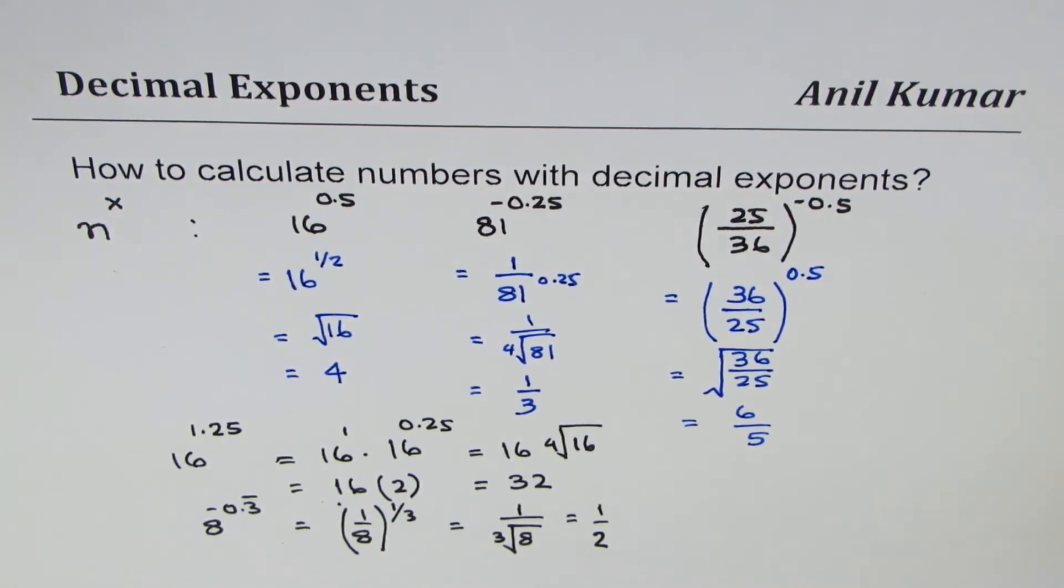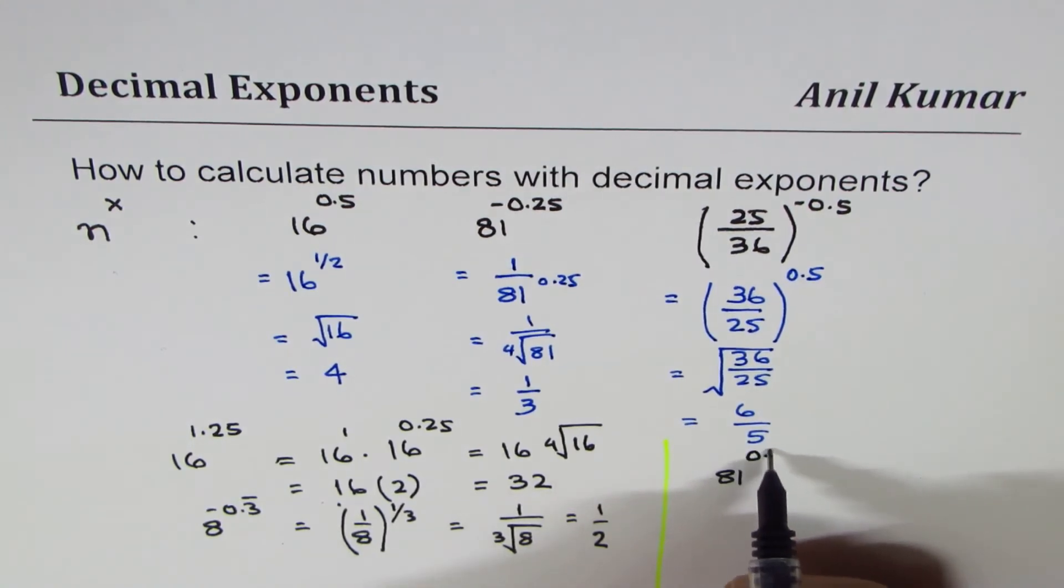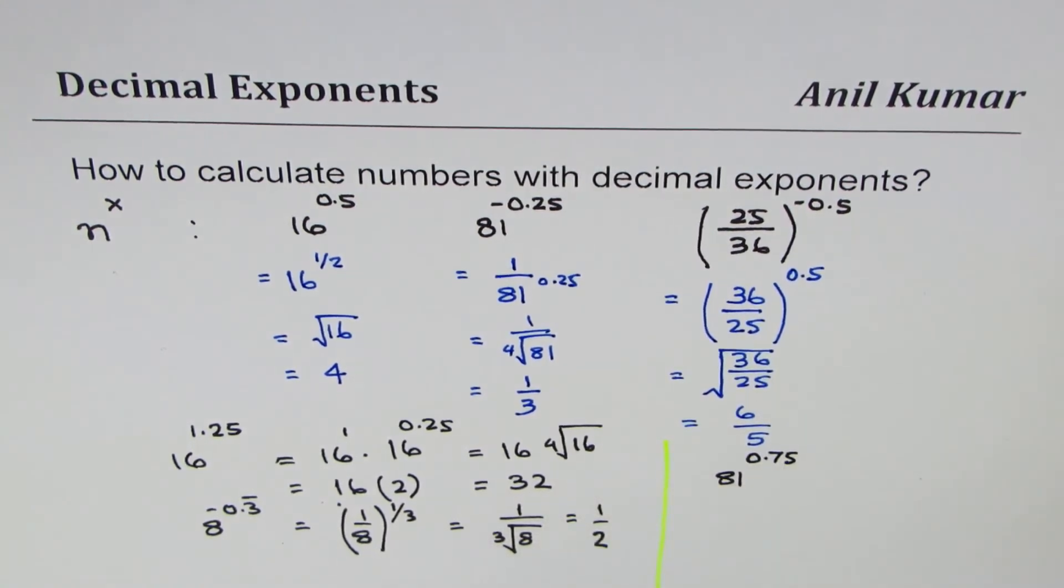I hope with this variety of examples you are in a good position to now calculate numbers with decimal exponents. Let's take some more decimal exponents, for example 81 to the power of 0.75, or we could take 64 to the power of minus 0.75. You can test your skills with these numbers.